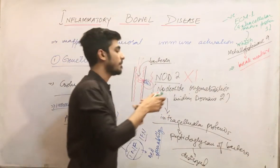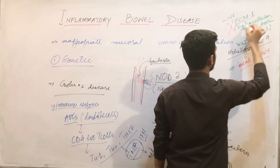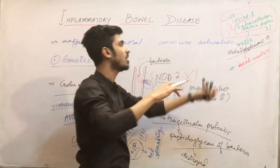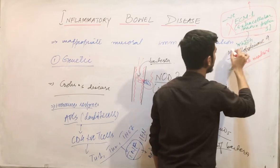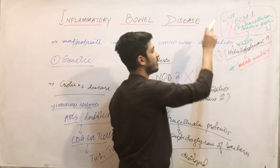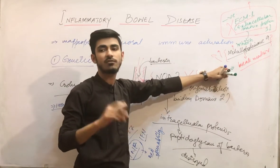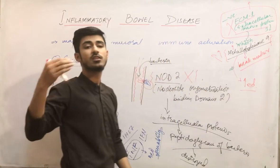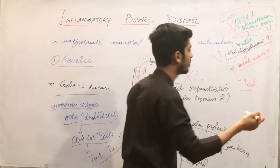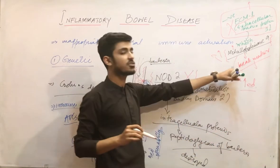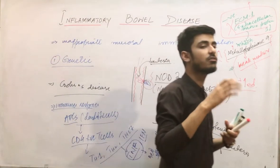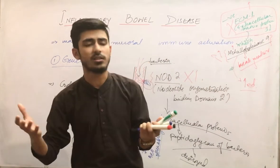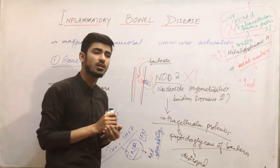In ulcerative colitis, there is a loss of function mutation in the ECM1 gene. This gene is lost. What happens is that metalloproteinase 9 is now relieved from the inhibitory effect of ECM1. Since ECM1 is not there, metalloproteinase 9 will not be inhibited, its function will be increased, and it will perform its function very efficiently — breaking down matrix proteins. Our matrix proteins will be broken down excessively and in this way there will be damage to our intestine and intestinal mucosa, permeability will increase, inflammation will be there, and ulcerative colitis will develop.